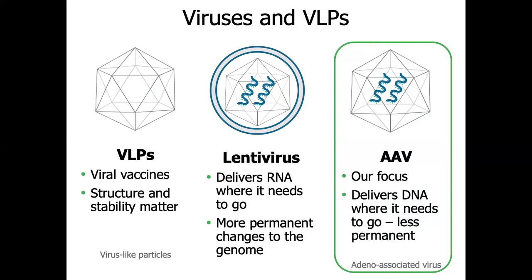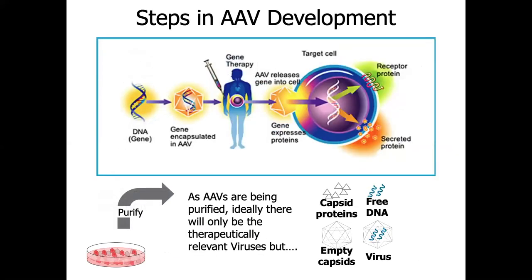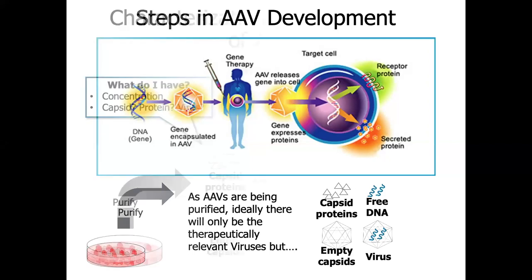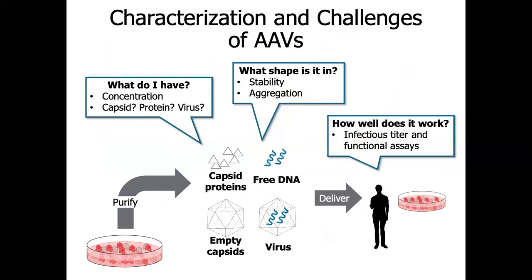Our focus of the talk today will be on AAVs. AAVs have evolved as a promising technology for gene therapy due to their safety profile and high efficacy. AAV-based gene therapy holds great promise for treating many diseases. But before it can be used as treatment, there are a multitude of steps that need to be completed. As AAVs are being produced and purified, ideally they would only be the therapeutically relevant viruses with the genetic information enveloped in the assembled capsid. But the reality is that there can be a mixture of assembled viruses, empty capsids with no DNA, free-floating DNA, and unassembled capsid proteins.